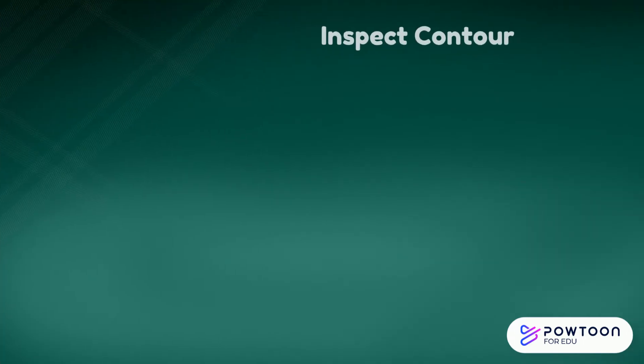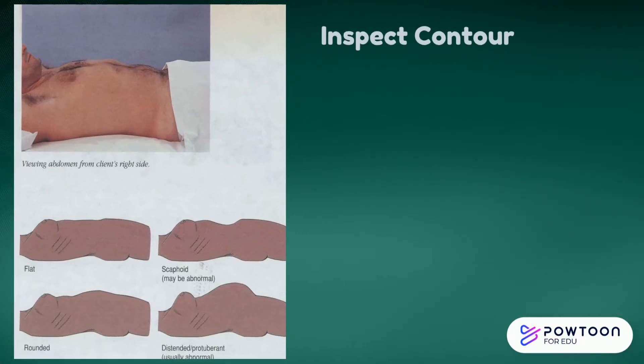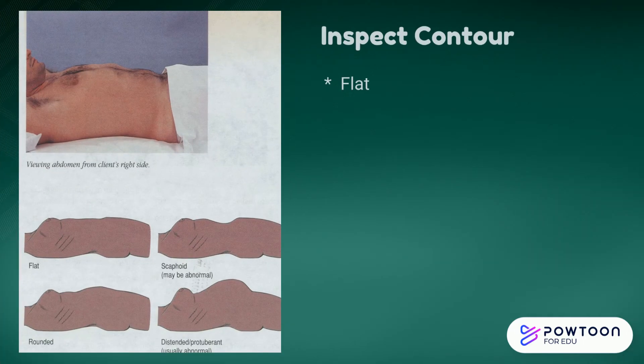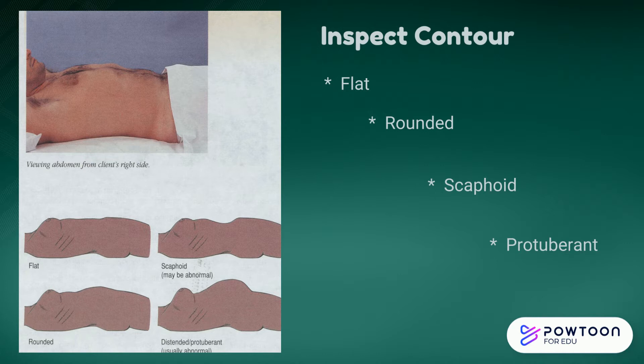Now you will assess for the contour — the basic shape of the abdomen. Is it flat or round? Scaphoid is where it's sunken in, or protuberant, meaning distended protuberant, is when it sticks out quite a bit.